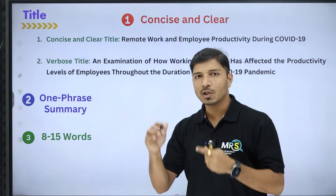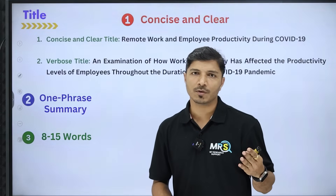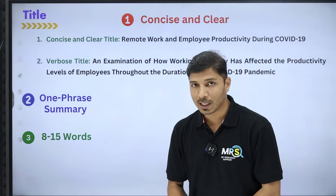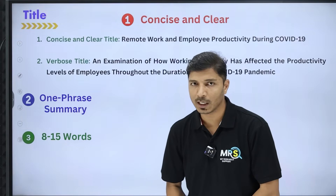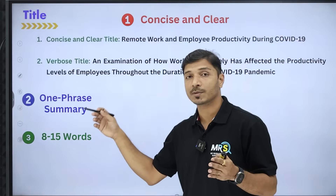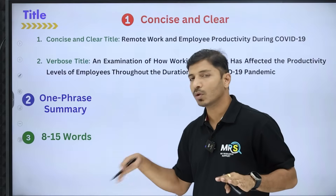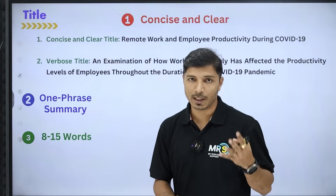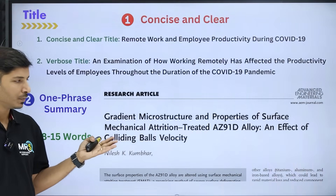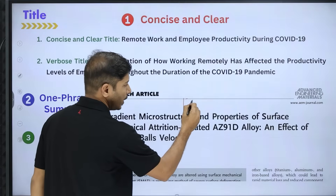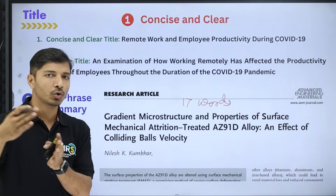Your title should be a one-phrase summary. We rarely write titles as sentences or questions. It should be between 8 to 15 words — there is no strict rule, but if your title is less than 8 words, it may not be specific enough, and if it is more than 15 words, it may become lengthy. Up to 20 words is okay; many journals even mention that the title should be less than 20 words.